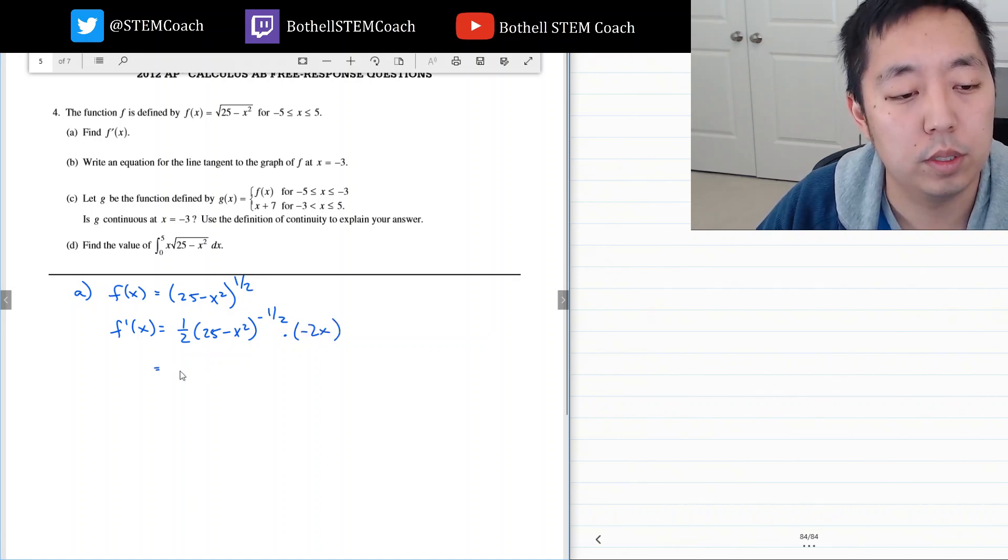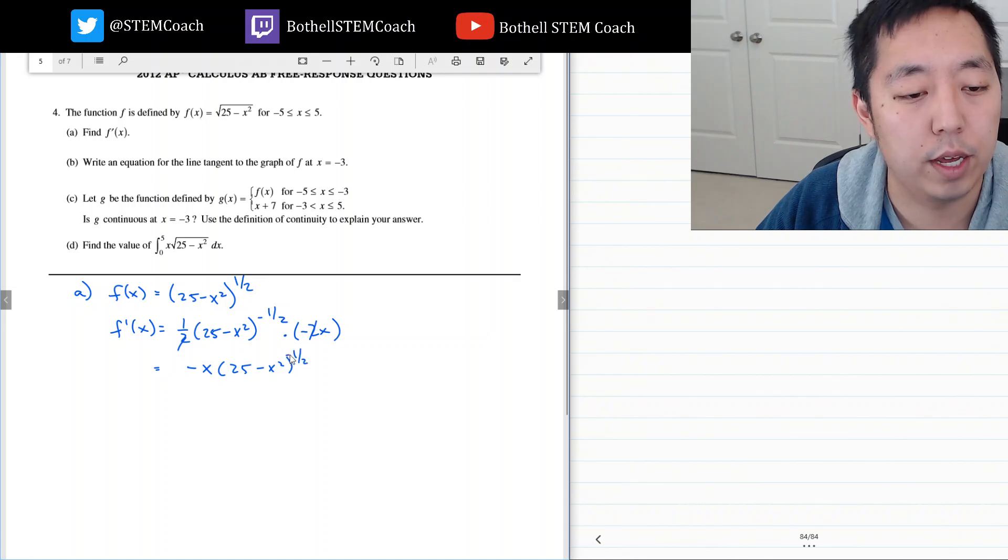That's equal to, these two's cancel but I still have a negative sign so it's negative x times 25 minus x squared to the negative one half. Which is equal to negative x over square root of 25 minus x squared.